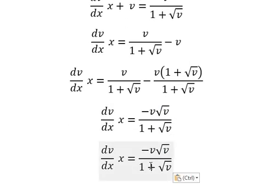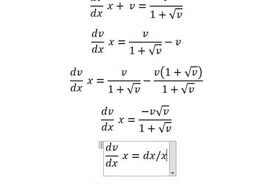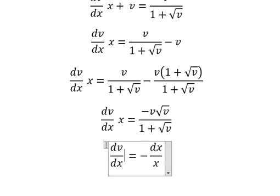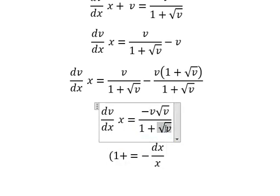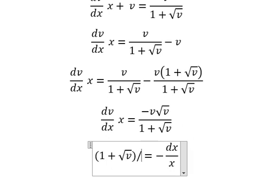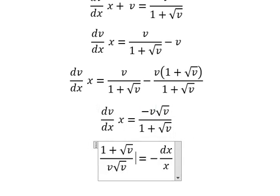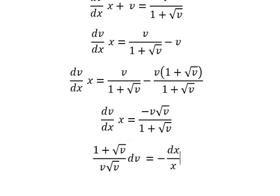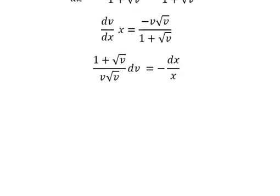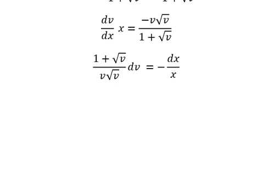Next, we separate variables by moving dx and x to the right side. We have 1 plus square root of v over v square root of v times dv equals negative dx over x. We set up the integration for both sides.